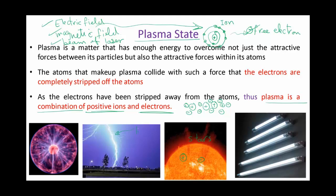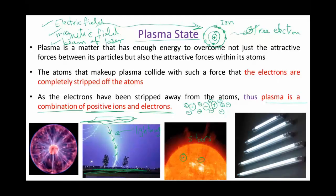Plasma also happens on earth during lightning. Between the clouds and the earth there will be a huge electrical potential — it reaches two million volts. Because there is a potential, there will be an electric current. It will be discharged through the air, causing the arc which we call the lightning bolt. Because of this huge electric current through the air, it will ionize the molecules and particles of the air into positive ions and negative electrons. So lightning is considered plasma.